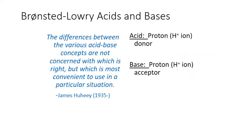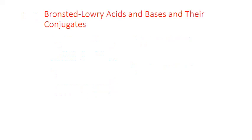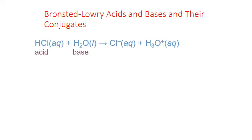There is a more general definition of acids and bases that can help explain this. It was proposed by Danish chemist Johannes Bronsted and English chemist Thomas Lowry. According to their definition, acids donate a proton (a hydrogen ion) during a reaction, while bases accept a proton. For example, HCl is an acid because it donates a proton to water when it dissolves, forming the chloride anion and the H₃O⁺ cation. Water, because it accepted that hydrogen, is considered a base.